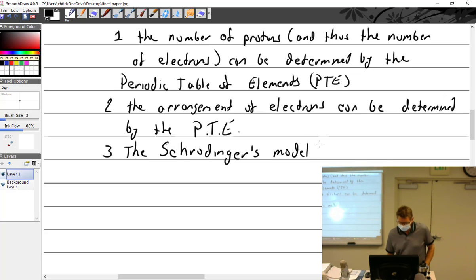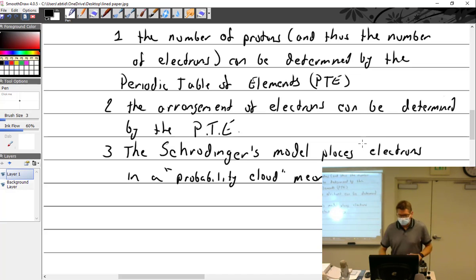The Schrödinger's model places electrons in a probability cloud, meaning they can be found in an area.